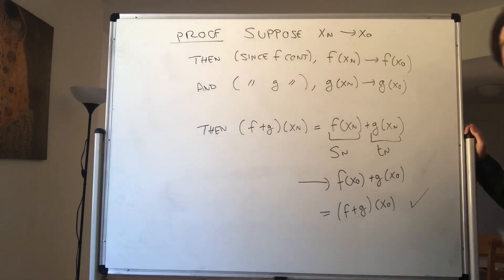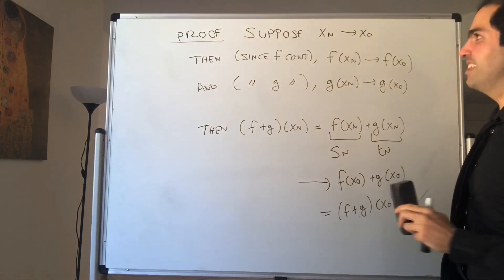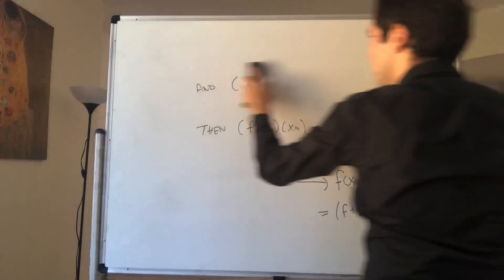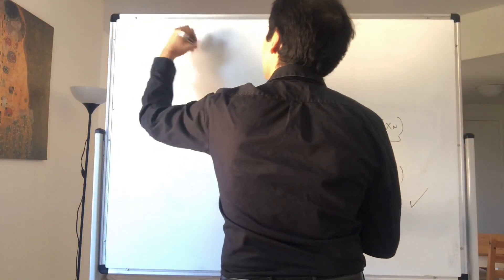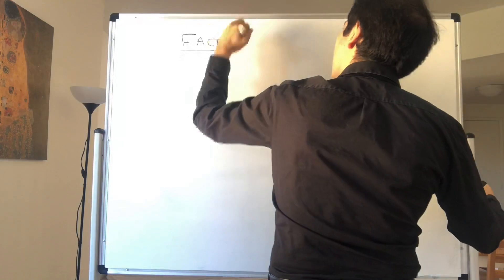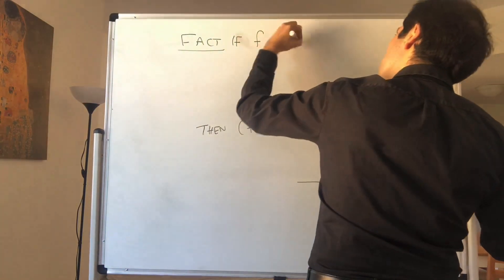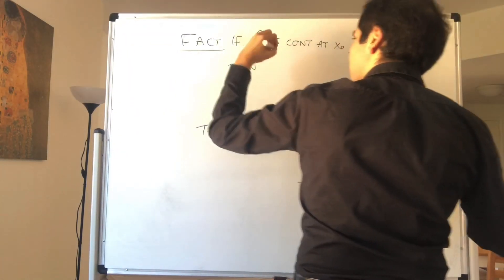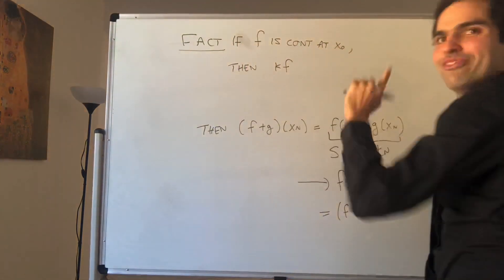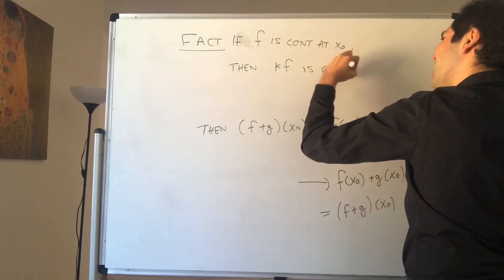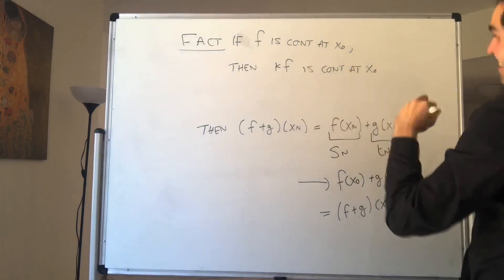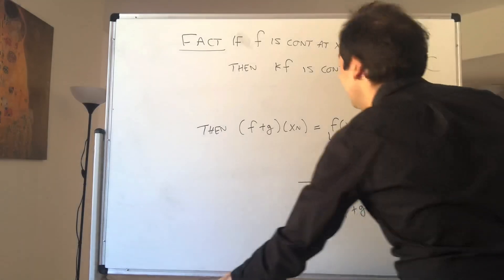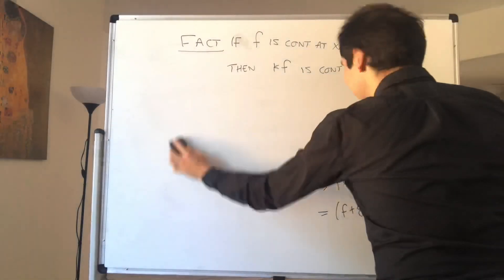Now we want to move on to proving that subtraction is continuous, but first we need an intermediary step. Next fact: if f is continuous at x naught, then any scalar multiple kf is also continuous at x naught. And that's a super neat proof.